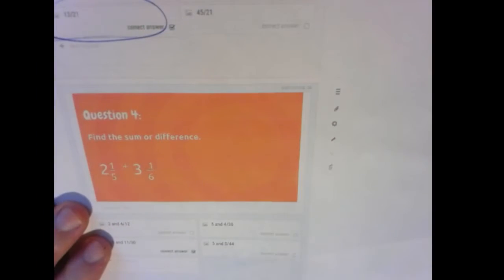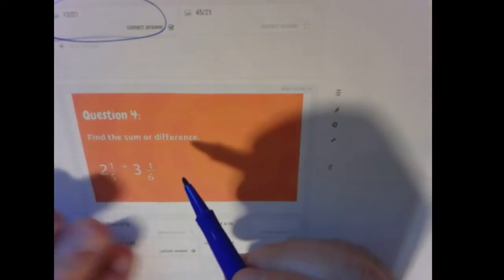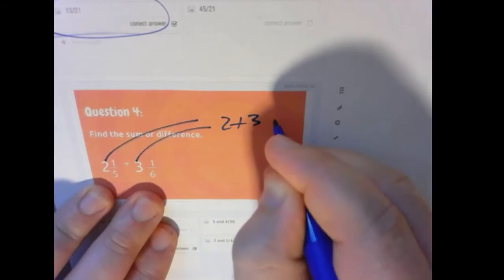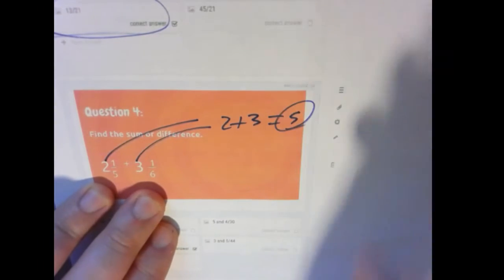Okay. Now we have mixed fractions again. Remember what we do? We get rid of these whole numbers, or put them to the side. So 2 plus 3 is 5. We'll hold on to that for a minute.